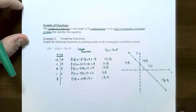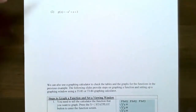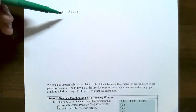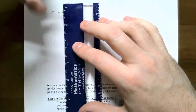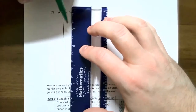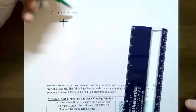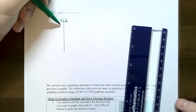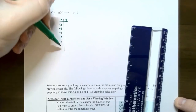Now let's focus on a different type of function. Number two - the function is called g, so g of x is equal to the opposite of x squared plus x plus three. We're going to graph by plotting points in the same rectangular coordinate system. Again, make an x-y table. This time we're going to use six points: negative three, negative two, negative one, zero, one, and two.